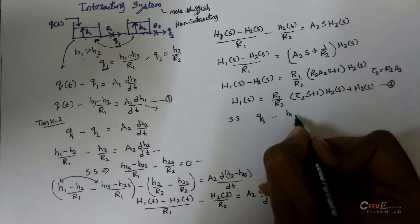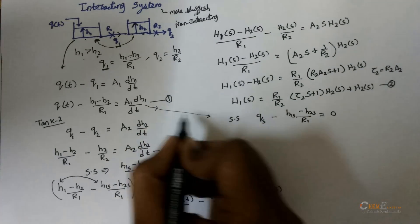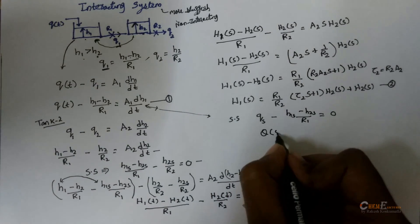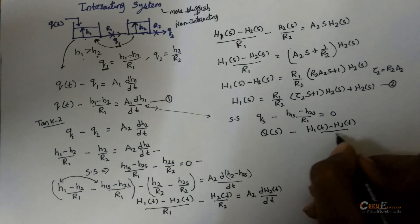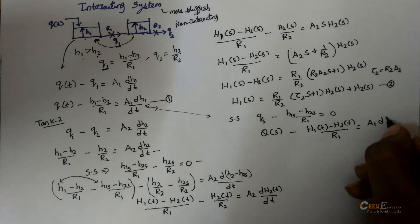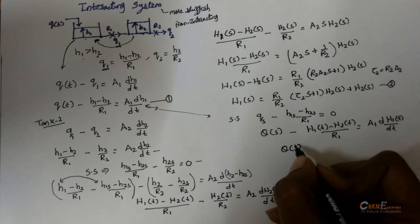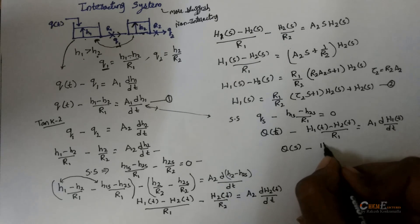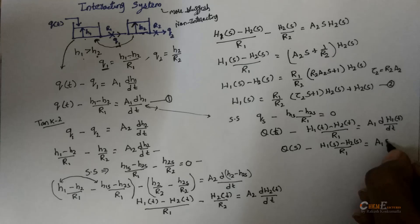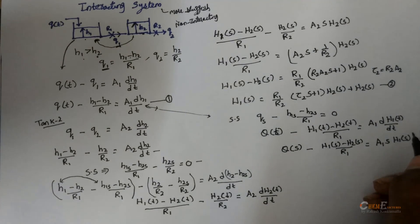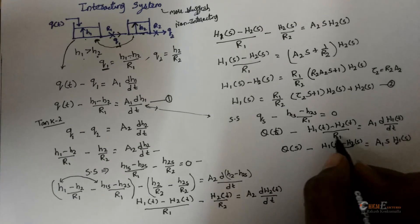At steady state for tank 1: Qs minus (H1s - H2s) / R1 equals 0. Taking the difference between the dynamic and steady-state equations gives: q(t) minus (h1(t) - h2(t)) / R1 equals A1 · dh1/dt. Applying the Laplace transform on both sides: Q(s) minus (H1(s) - H2(s)) / R1 equals A1·s·H1(s).